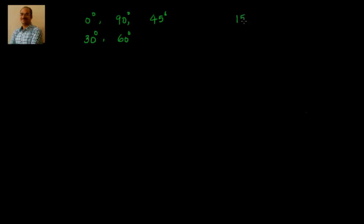With compound angles we know 15, because 15 is nothing but 45 minus 30. And with multiple and sub-multiple angles we know the value of 22 and a half, because 45 by 2 is 22 and a half. Now we want to find out the value of 18 degrees. We will find out the value of sin 18, cos 18, sin 36, and cos 36 in this video.